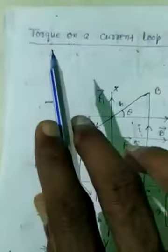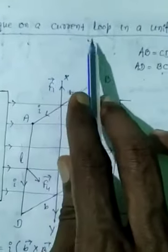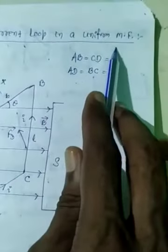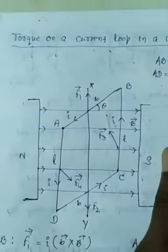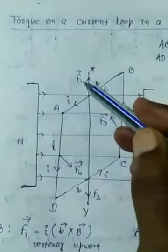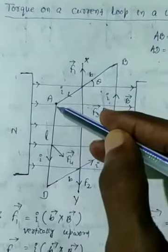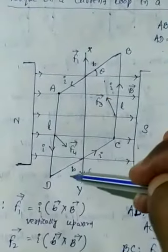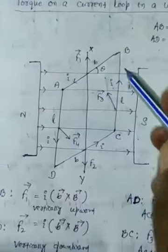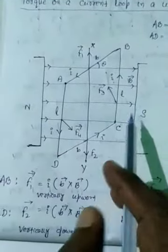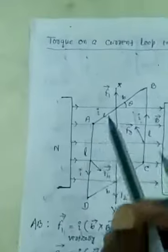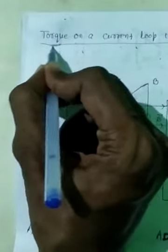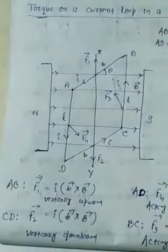Dear students, today we have to discuss about the torque on a current loop in a uniform magnetic field. Whenever a rectangular loop A, B, C, D is taken inside a uniform magnetic field created by a north pole and south pole, we have to discuss how much amount of torque will act upon this loop.